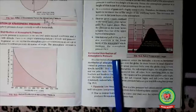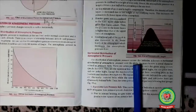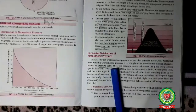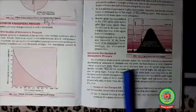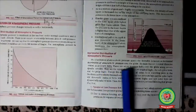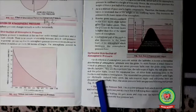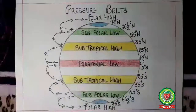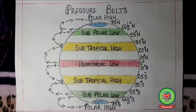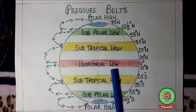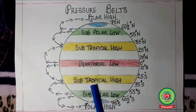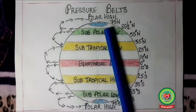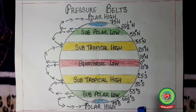Now let us study the horizontal distribution of atmospheric pressure. The distribution of atmospheric pressure across the latitudes is known as horizontal distribution. Over the globe, its main feature is a zonal character, termed pressure belts. Pressure belts are created due to two reasons — thermal and dynamic. The world is divided into four pressure belts: equatorial low pressure belt, subtropical high pressure belt, subpolar low pressure belt, and polar high pressure belt.